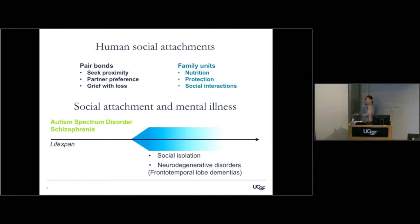So I'm going to take a look at either an environmental impact or a disease impact that has an effect on social attachment behavior and how it allows us to probe this at a neurological level, especially in aging.